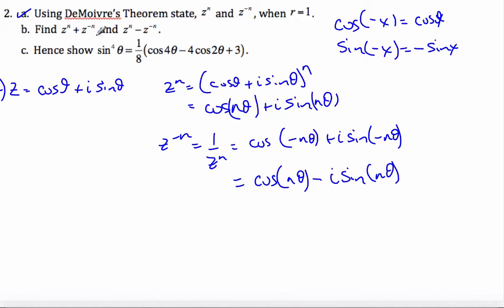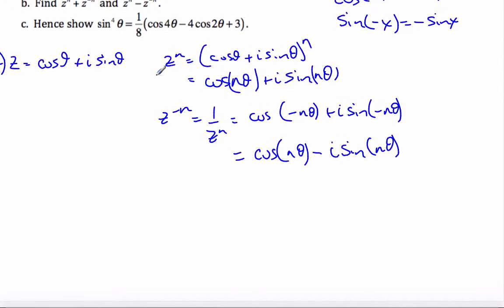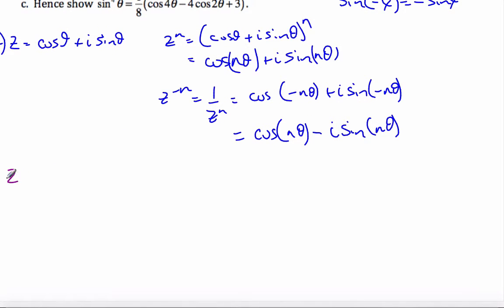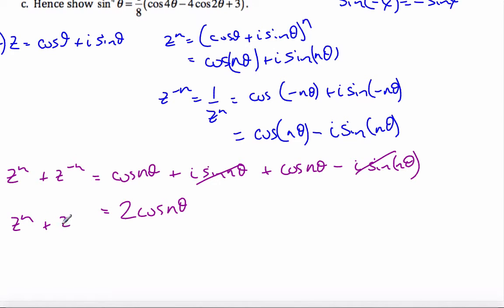Now, it wants to define z^n plus z^(-n). Well, to do part B, we're going to use some of the things we just calculated. z^n plus z^(-n) is going to be cosine n theta plus i sine n theta plus cosine n theta minus i sine n theta. Those terms cancel out because they're negative and positive and so I have 2 cosine n theta.